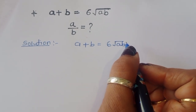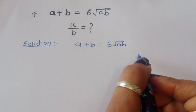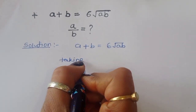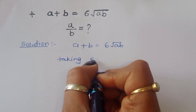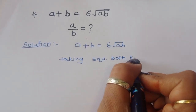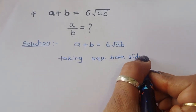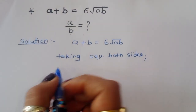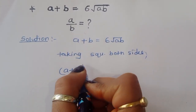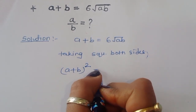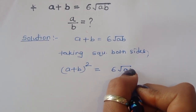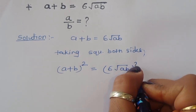We can do one thing here: we can take the square of both sides. Taking square both sides, we will get a plus b squared is equal to 6 root of ab, squared.